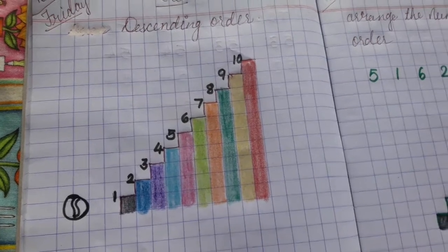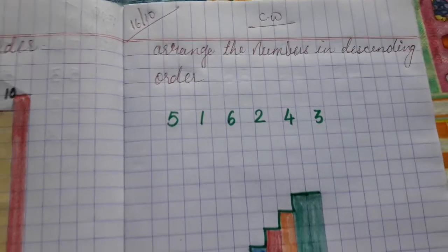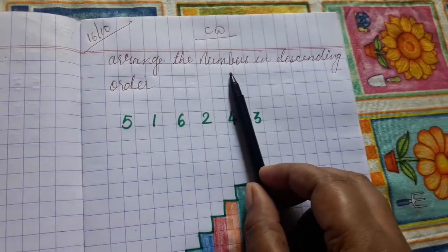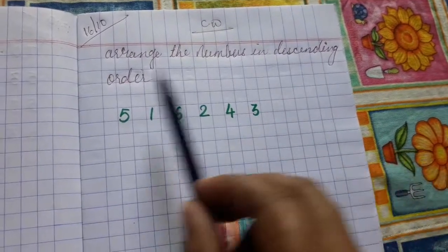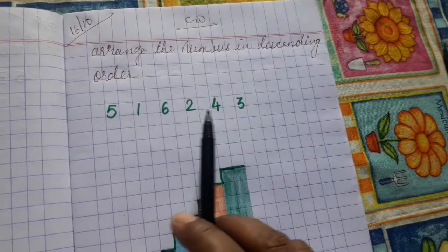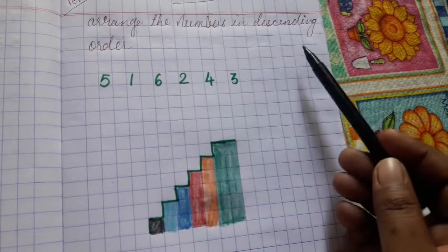Now see here. Arrange the numbers in descending order. We have these numbers: 5, 1, 6, 2, 4, 3. We have to write these numbers in descending order.